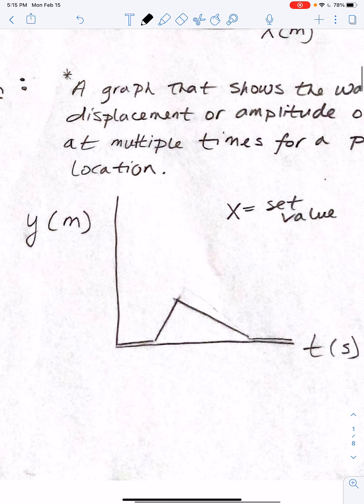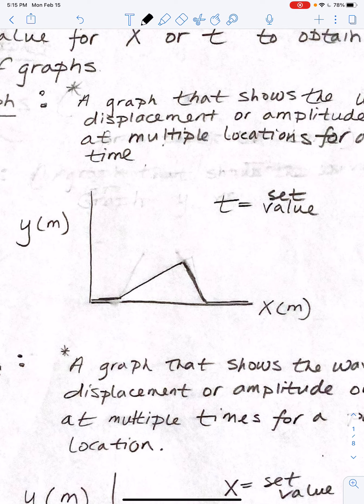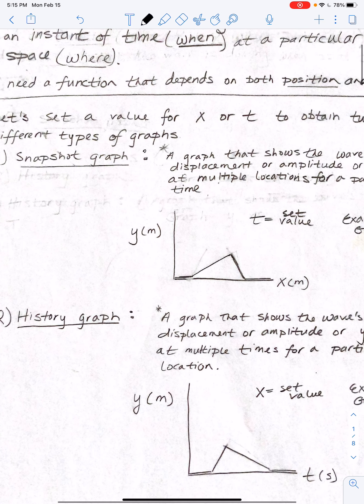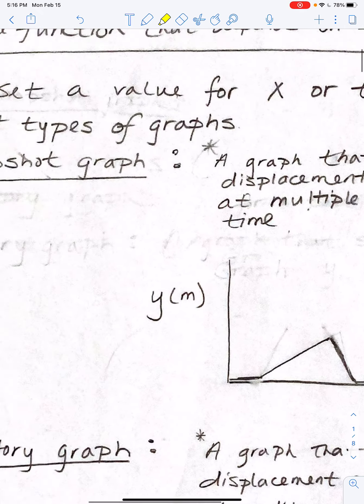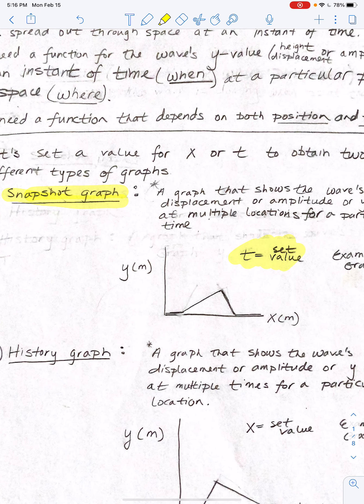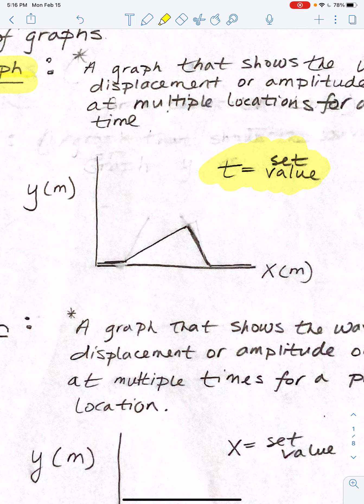Amplitude is a function of time, and we call this a history graph. Amplitude can also be a function of position, and we call this a snapshot graph. The snapshot graph is like taking a snapshot at the lake or beach — you can see the water at different distances from shore along the x-axis, and what the water looks like at a set time value. On a snapshot graph, it's like taking a picture: you freeze time and the amplitude is doing different things at different distances from the shore.